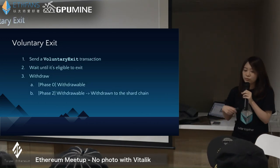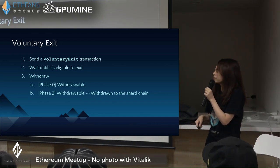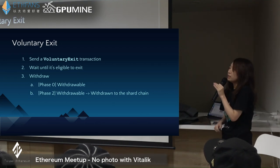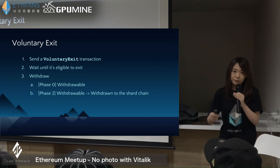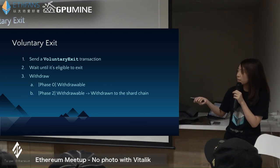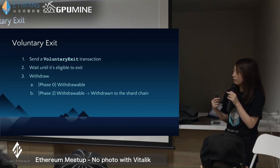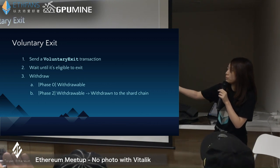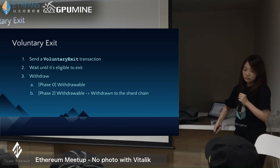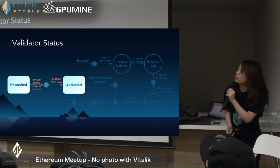If I want to leave, I have to create a voluntary exit message and broadcast it to the network. I can't leave immediately — I have to wait to withdraw my balance. In phase zero, there will be a state called the withdrawable state. Because shard state execution is not here yet, in phase 2 when we add the state execution engine, the withdrawable balance will be withdrawn to the shard chains.